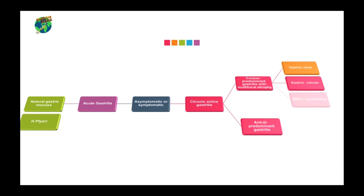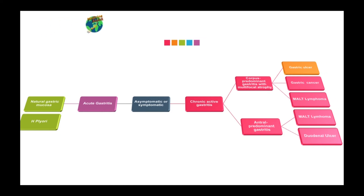The corpus predominant gastritis with multifocal atrophy can lead to gastric ulcer and, with the influence of environmental factors, to gastric cancer. The antral predominant gastritis leads to duodenal ulcer and mucosa-associated lymphoid tissue lymphoma. This mucosa-associated lymphoid tissue lymphoma is also formed from corpus predominant gastritis with multifocal atrophy.